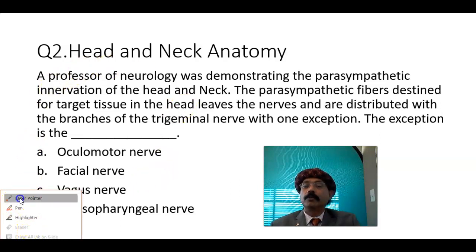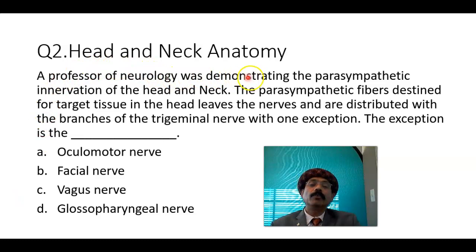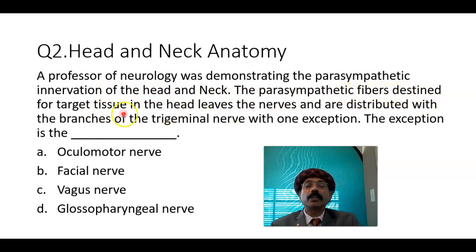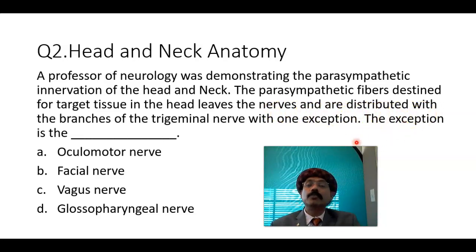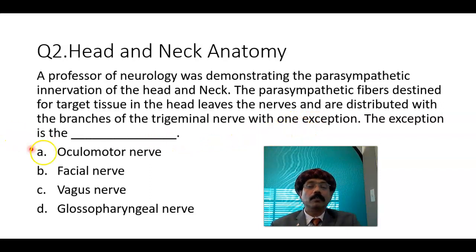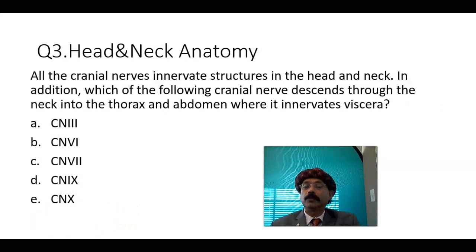A professor of neurology was demonstrating the parasympathetic innervation of the head and neck. Parasympathetic fibers destined for target tissue in the head leave cranial nerves — third, seventh, ninth, and tenth — and are distributed with the branches of the trigeminal nerve, with one exception. What is that exception? Oculomotor nerve, facial nerve, vagus nerve, or glossopharyngeal nerve?